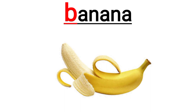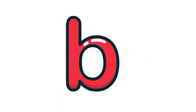This is a fruit — banana, banana, banana. What is the color of banana? Yellow, yellow, yellow. What is this? B, B, B.